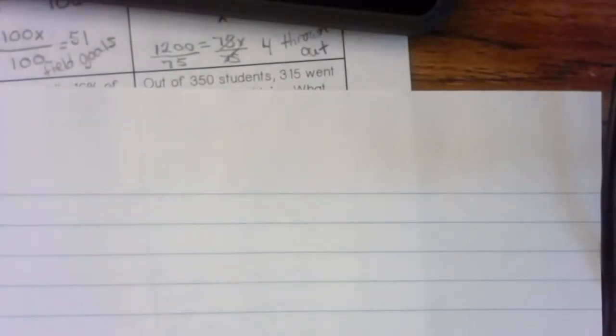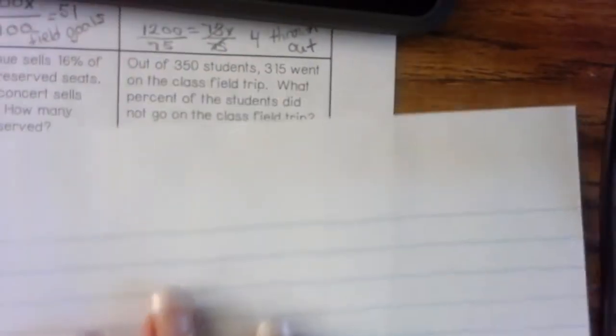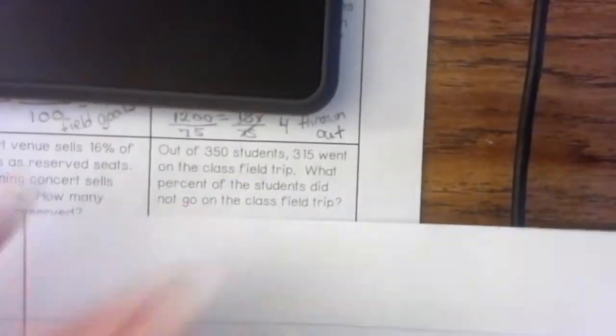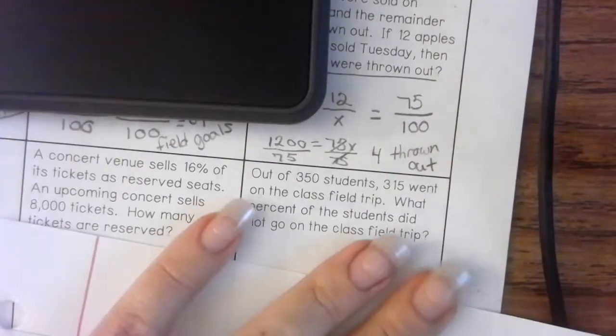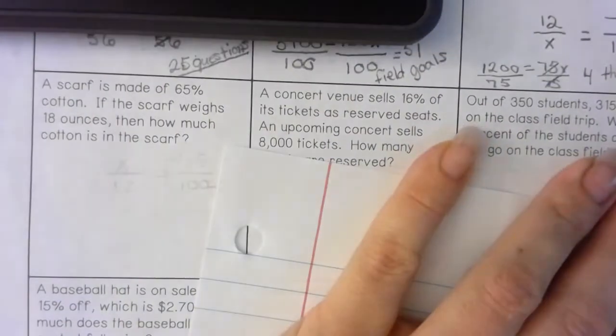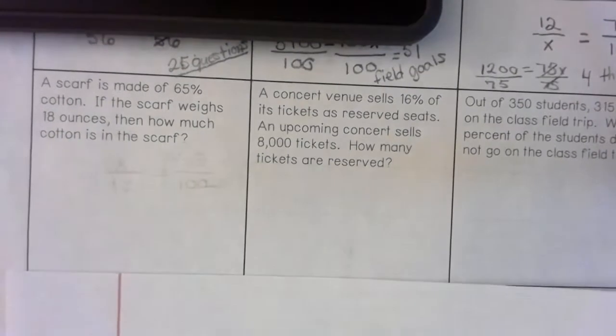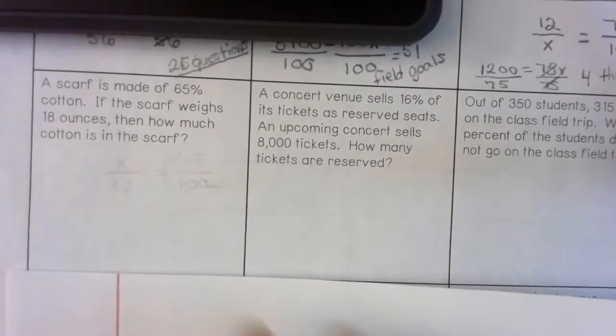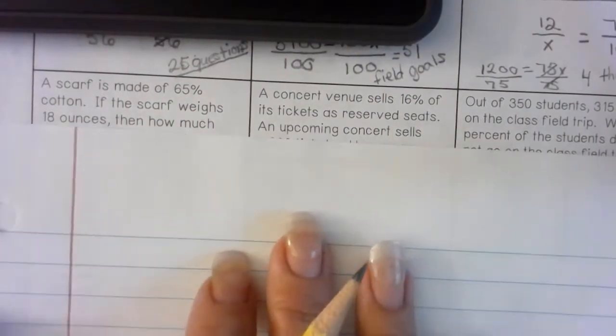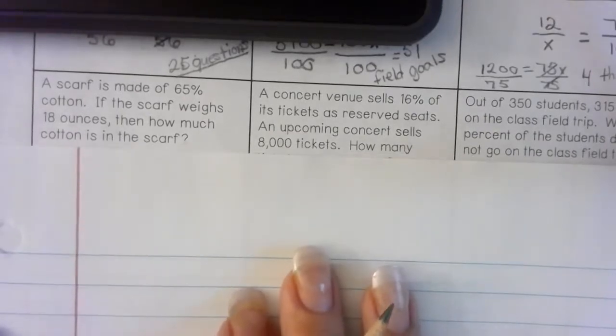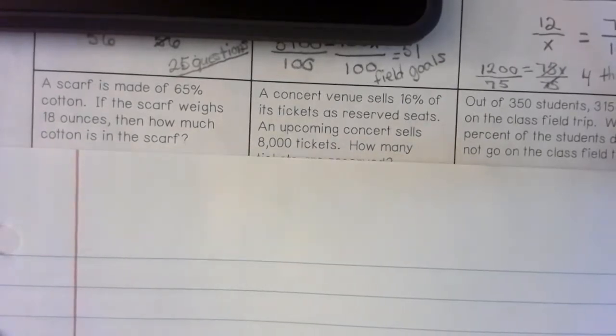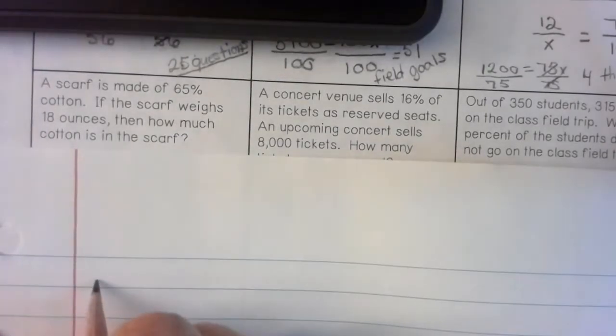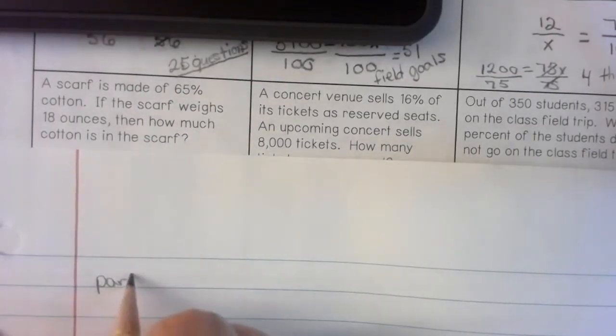Okay, so we're now going to work on the next three problems. We have a scarf is made of 65% cotton. If the scarf weighs 18 ounces, then how much cotton is in the scarf? Guys, it is very important that you are reading the entire question. Ask yourself, what do I know? How do I set up this proportion? This is a part whole, part whole, just like we have been doing.